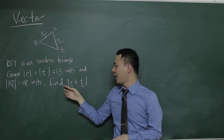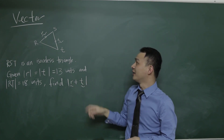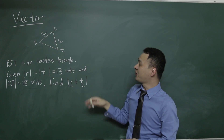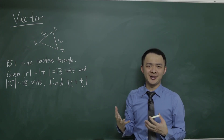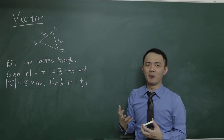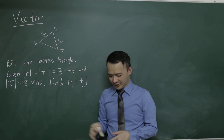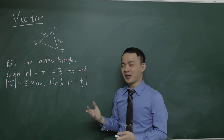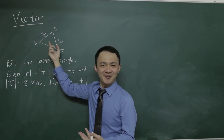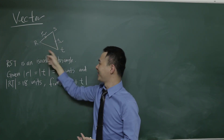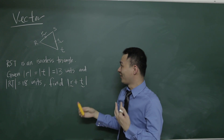The question asks you to find the magnitude of R plus T. In order to find R plus T, you need to think about where R plus T actually is, because a lot of students' first instinct tells them that R plus T is basically RT — it seems like R plus T gives you RT — but in this case, it is not.